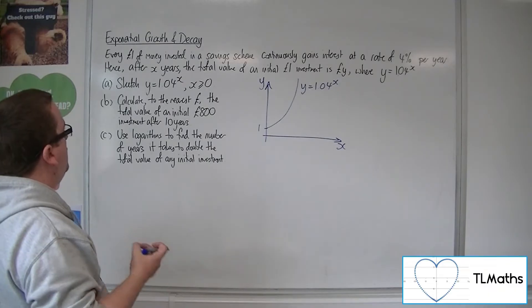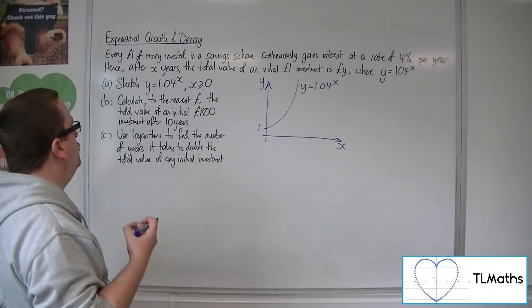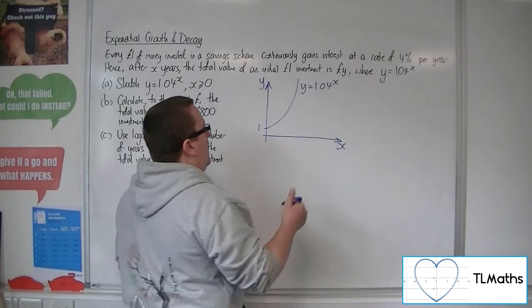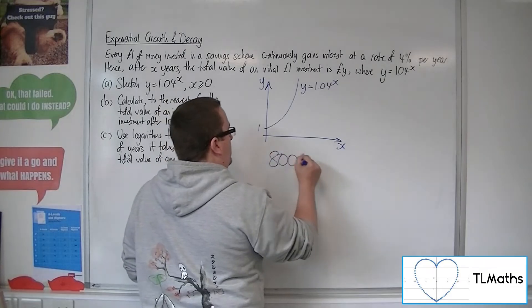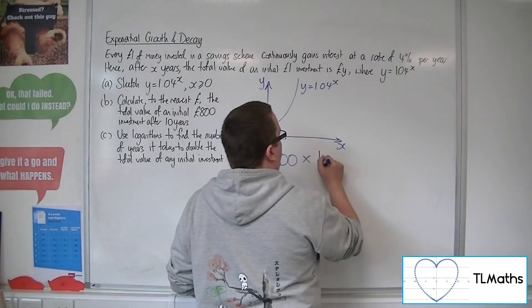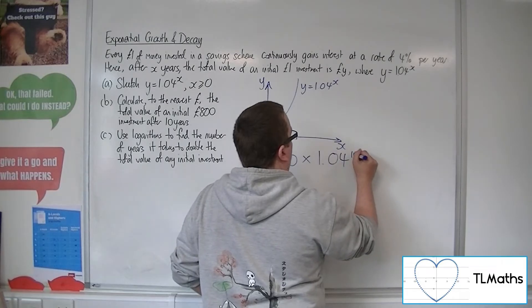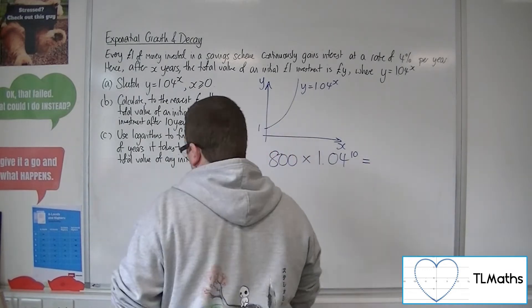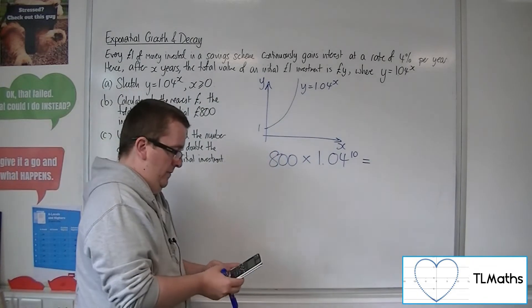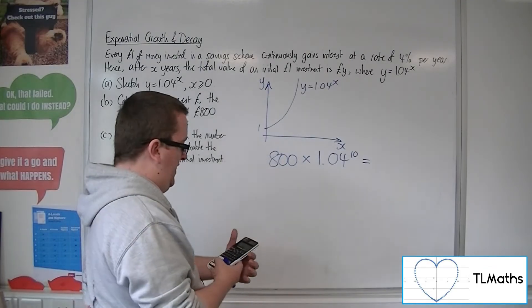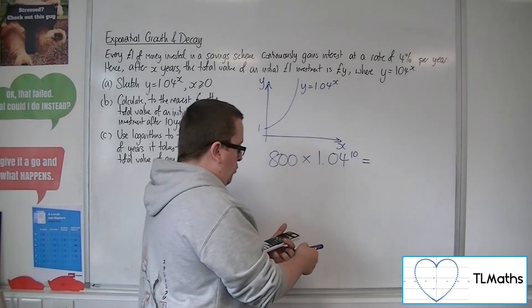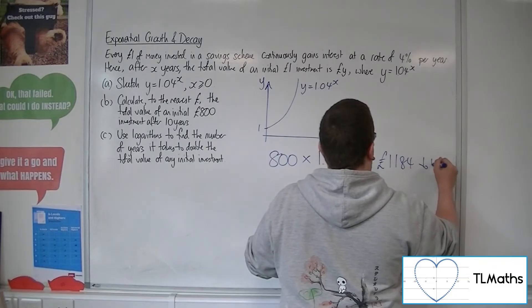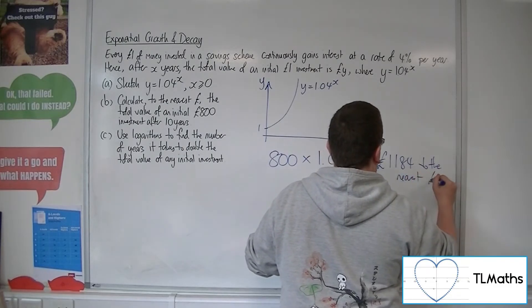Calculate to the nearest pound the total value of an initial £800 investment after 10 years. So after 10 years, our £800 is being multiplied by the 1.04 ten times. So 800 times by 1.04 to the power of 10 is £1,184 to the nearest pound.